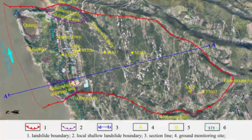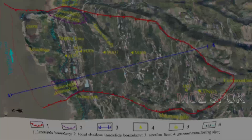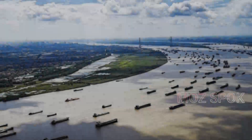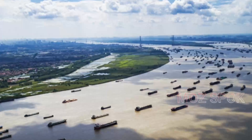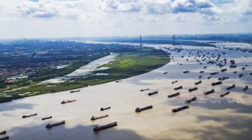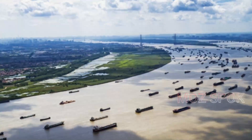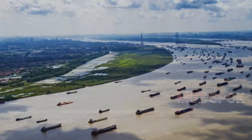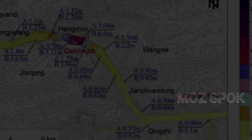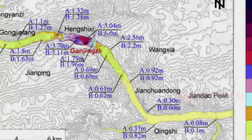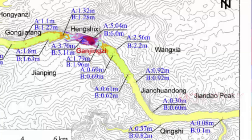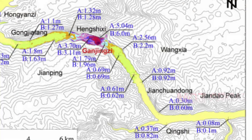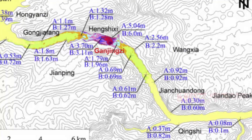Based on this, the reservoir-induced landslides in the TGR region can be roughly classified into five failure patterns: accumulation landslide, dip-slope landslide, reversed bedding landslide, rockfall, and karst-breccia landslide. The accumulation landslides and dip-slope landslides account for more than 90 percent.